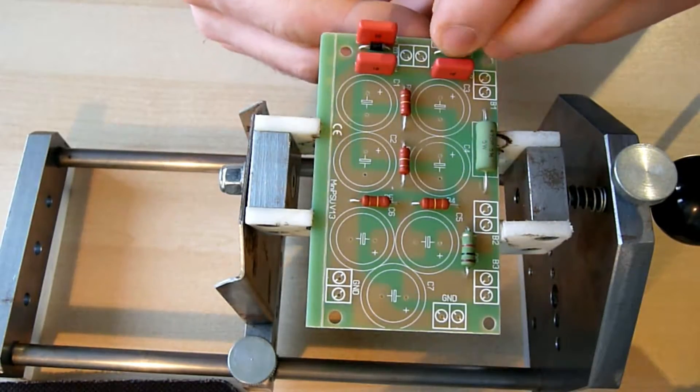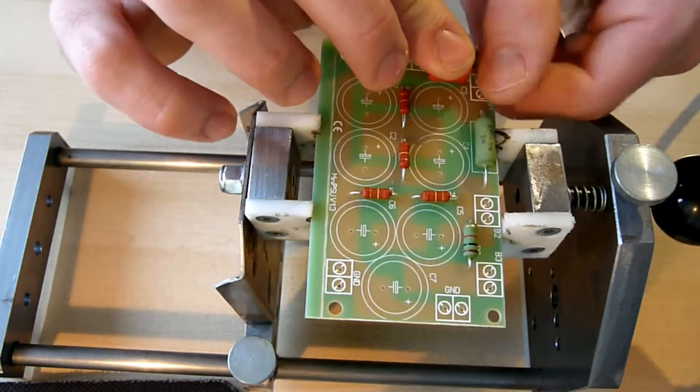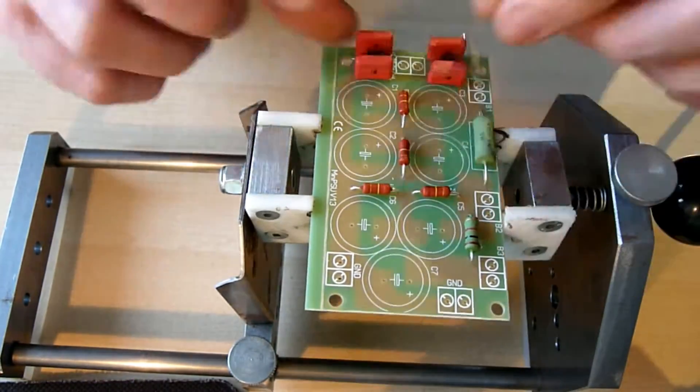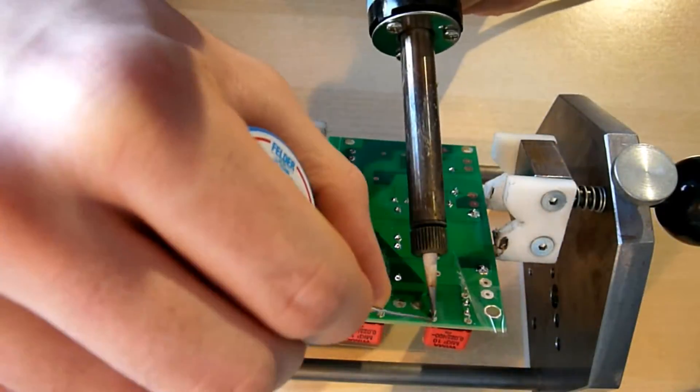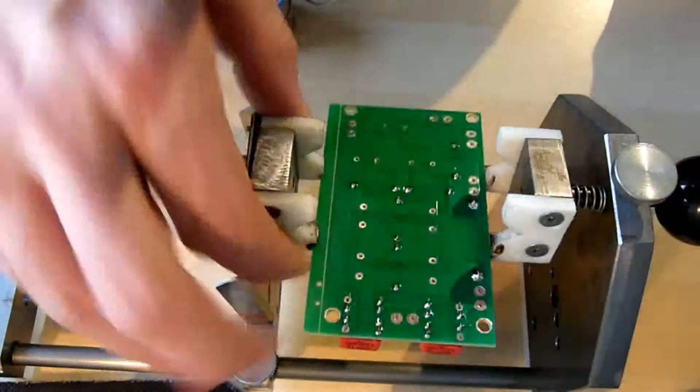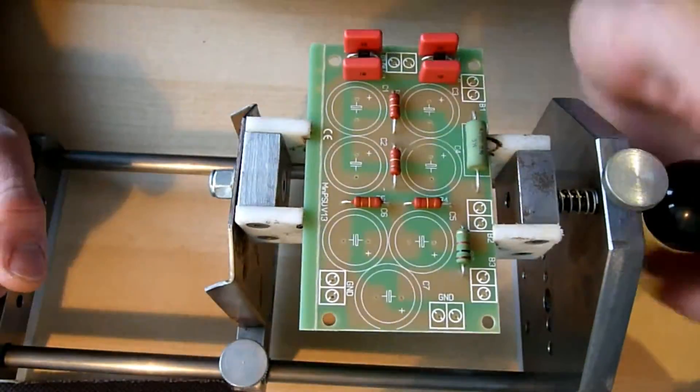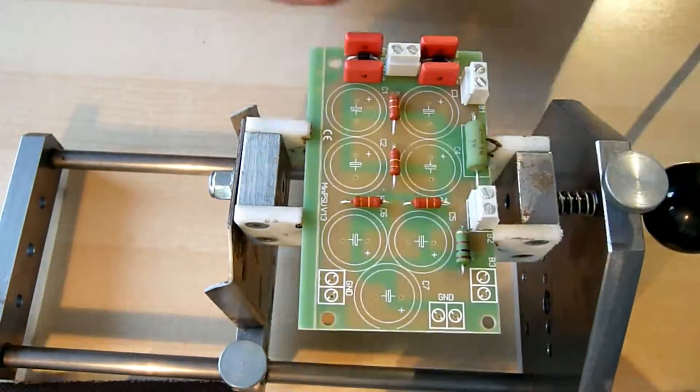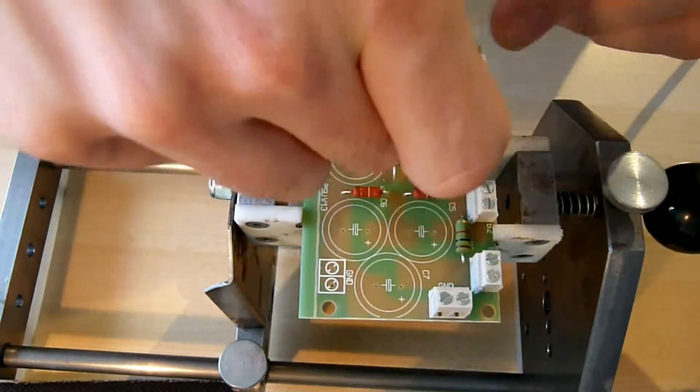Then we fit in the film capacitors, they are all the same. To secure them from falling out I use a bit of tape. These are the connectors for all cables. The ground connection down left stays empty.